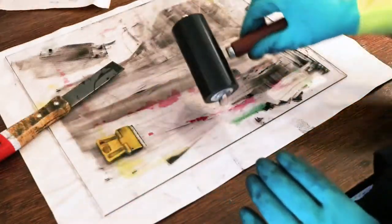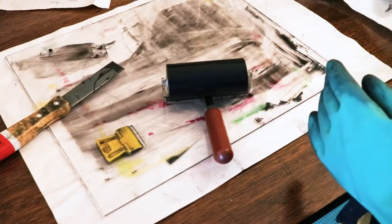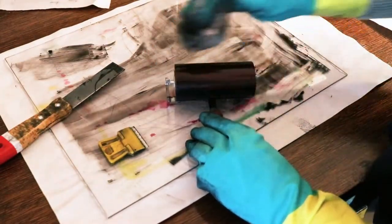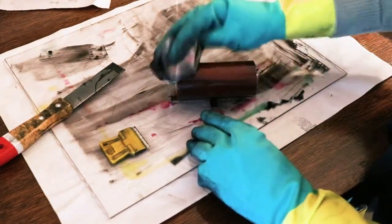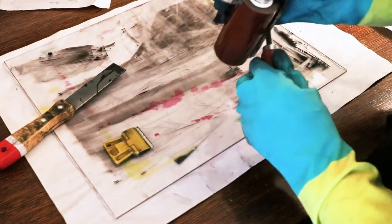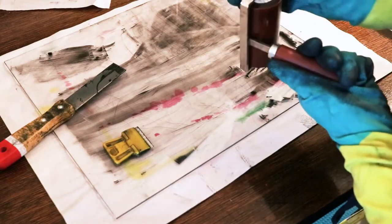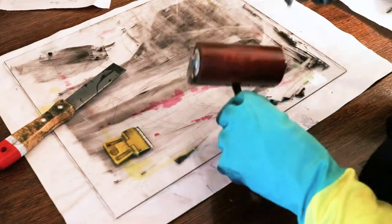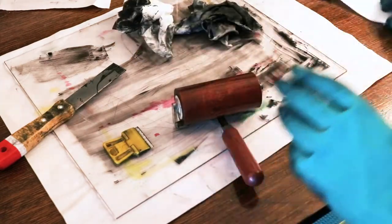When you've rolled as much ink off the brayer as you can, you can wipe the remainder off with your rag and solvent. Wipe away the ink on the surface of the brayer and also make sure to clean the sides and the frames of the roller. Go over the whole thing again with a clean cloth or paper towel and solvent and then go over it one final time with a dry clean cloth.